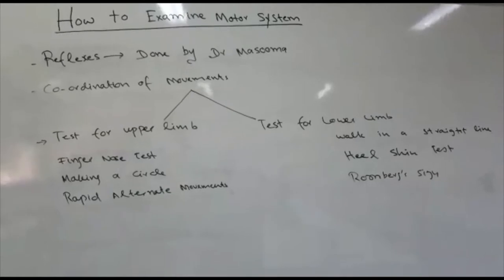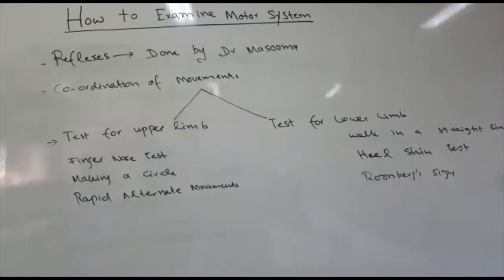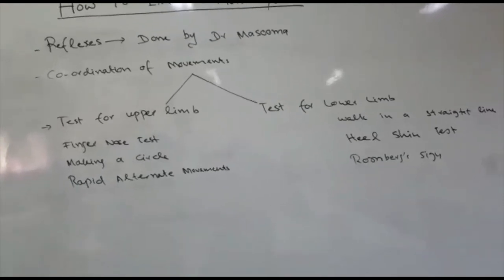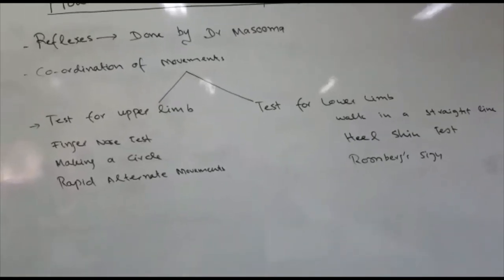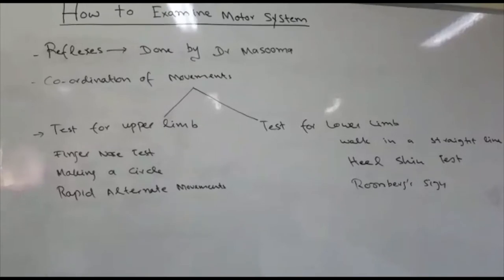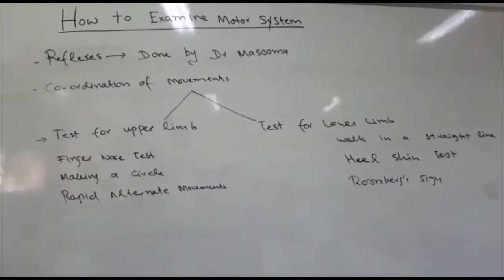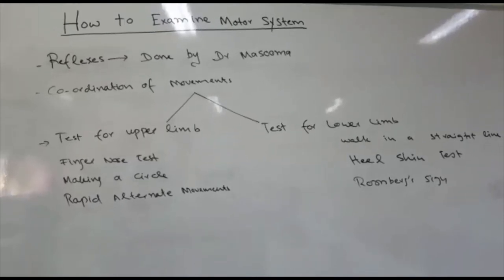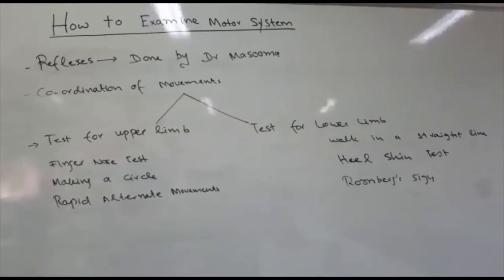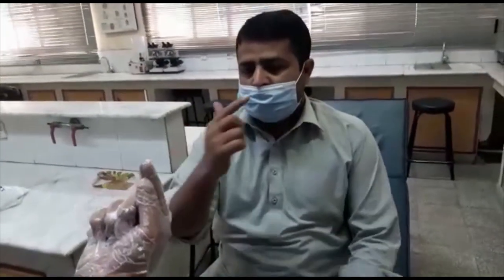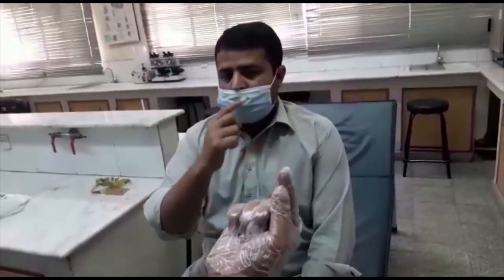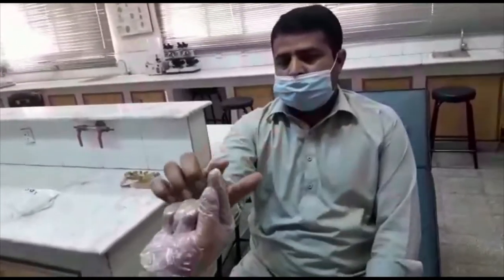After power of muscles, there are reflexes, which are done by our colleague Dr. Masuma. After reflexes, we start from coordination of movements. For the upper limb, we perform the finger-nose test, making a circle, and rapid alternate movements. I now ask my subject to start the finger-nose test.